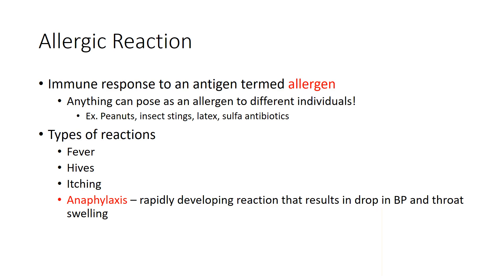Allergic reactions are best defined as an immune system response to an antigen that we call an allergen. Remember, an antigen is something that elicits an immune response. With an allergic reaction, someone is going to suffer from signs and symptoms caused by largely harmless things. An example would be an allergic reaction to peanuts — most people can ingest peanuts with no negative reaction, but some can have such a strong reaction that it can lead to death.